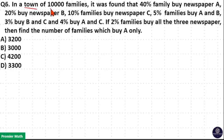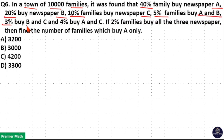In a town of 10,000 families, it was found that 40% of families buy newspaper A, 20% buy newspaper B, 10% buy newspaper C, 5% buy A and B, 3% buy B and C, and 4% buy A and C. If 2% of families buy all three newspapers,